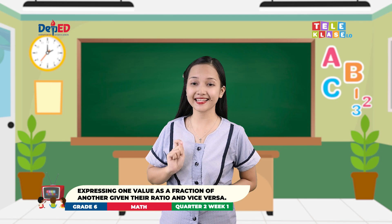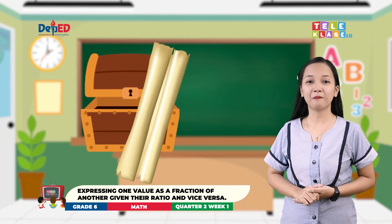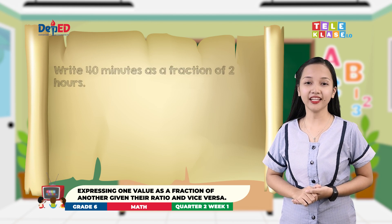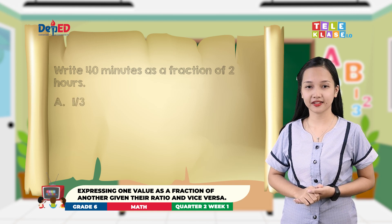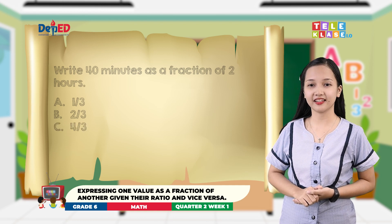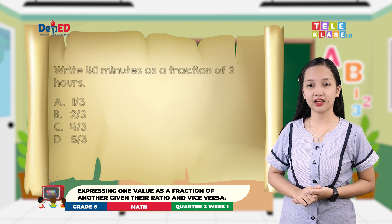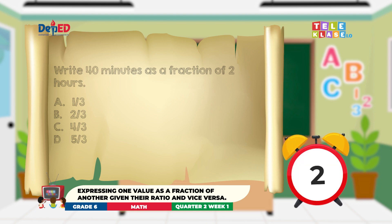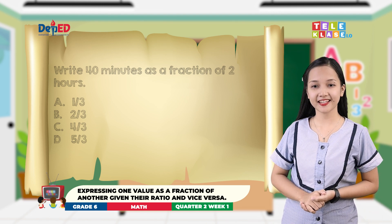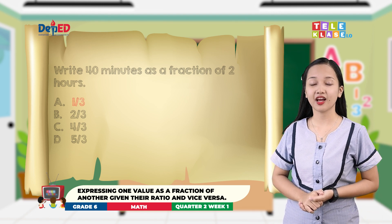Let us practice your understanding by answering the items placed in the boxes. I will give you twenty seconds for each item. Box 1 question: Write 40 minutes as a fraction of two hours. Letter A: 1 third. Letter B: 2 thirds. Letter C: 4 thirds. Letter D: 5 thirds. The correct answer is 40 over 120, or 1 third.